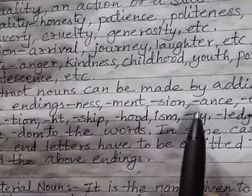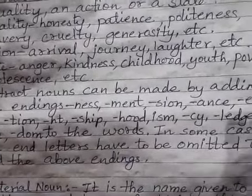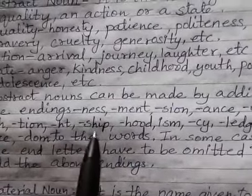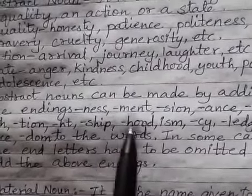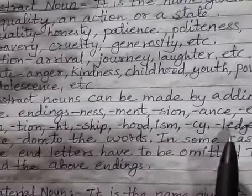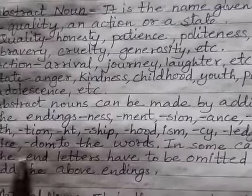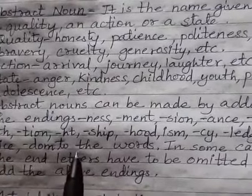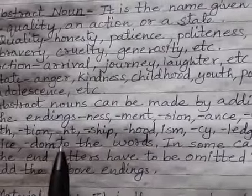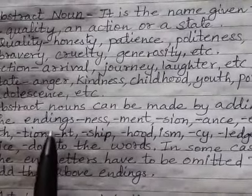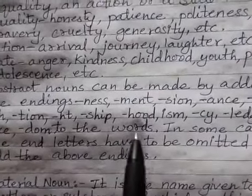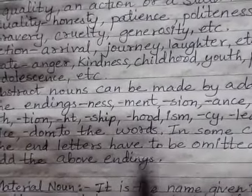The endings that can be added to form abstract nouns include: -ness, -ment, -sion, -ance, -ence, -th, -tion, -ship, -hood, -ism, -cy, -ledge, -ice, and -dom. By adding these endings to a given word, it will become an abstract noun. In some cases, the ending letters of the base word must be omitted before adding the new ending.